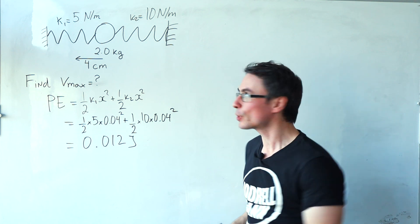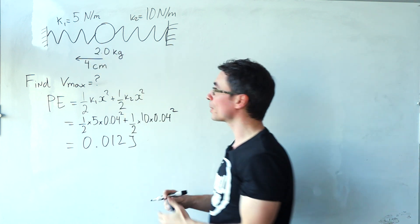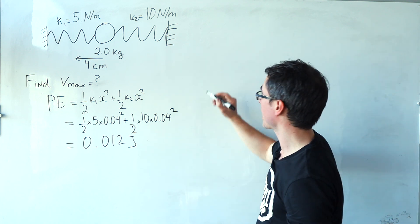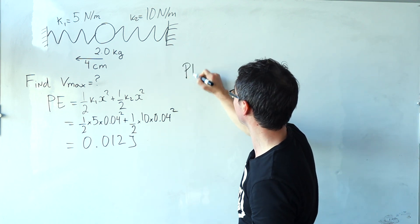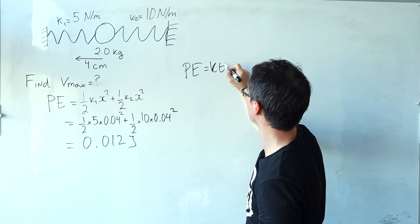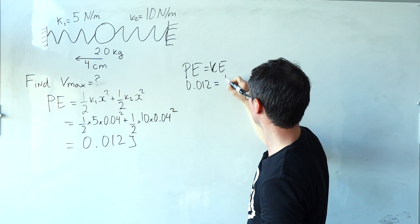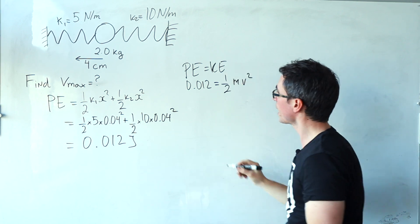All of this potential energy from the extension from the equilibrium will get converted to kinetic energy once the system passes through the equilibrium. So we can set that equal to the kinetic energy. We can set 0.012 joules to be equal to a half mv squared.